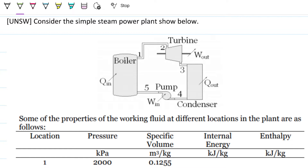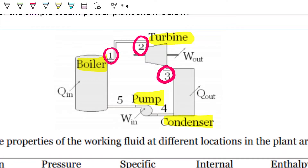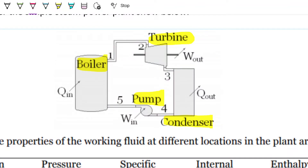This is a problem by UNSW. Consider the simple steam power plant shown below. The drawing has four components — a boiler, a turbine, a condenser, and a pump — with five different thermodynamic states: state one, two, three, four, and five.